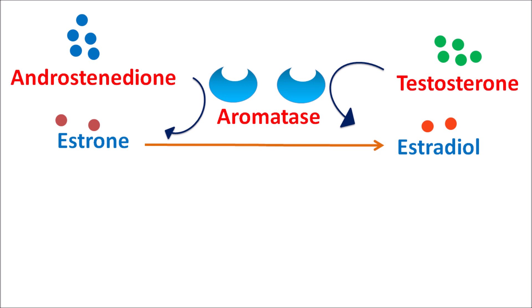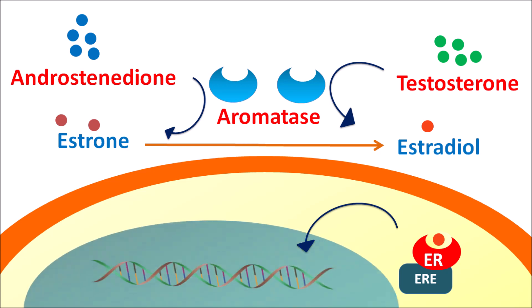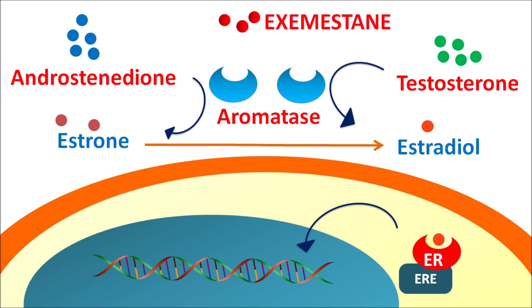In breast tissue, estrogen receptors are located within the cytoplasm, where they are coupled with estrogen-responsive elements. Estradiol binds to these estrogen receptors, which then dimerize and are internalized within the nucleus to interact with DNA. This produces the estrogen response, resulting in proliferation of breast tissue and leading to increased progression of breast cancer.